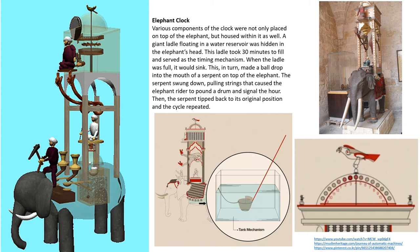Various components of the elephant clock are housed on top of and inside the body of the elephant. A giant ladle is placed in a water reservoir inside the elephant's head with a hole at the bottom — it takes 30 minutes to fill this ladle, adapted from the water clock mechanism. When the ladle sinks, it pulls a string and rotates gears at the top, with a bird releasing a ball into the mouth of a serpent, which swings down pulling a string, causing the elephant rider to pound a drum signaling each half-hour.